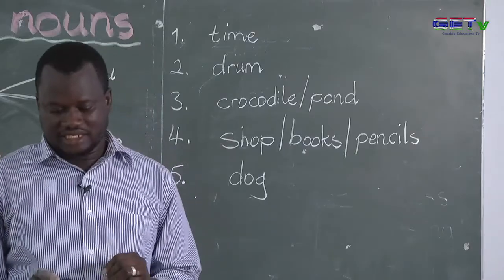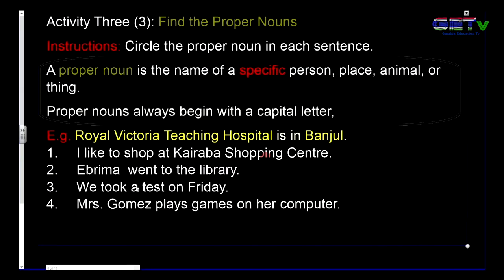The last question for this activity: 'I played with his dog.' We are to identify only one common noun, and that one common noun is dog. Now we move on to activity three: find the proper nouns. Instructions: circle the proper noun in each sentence.